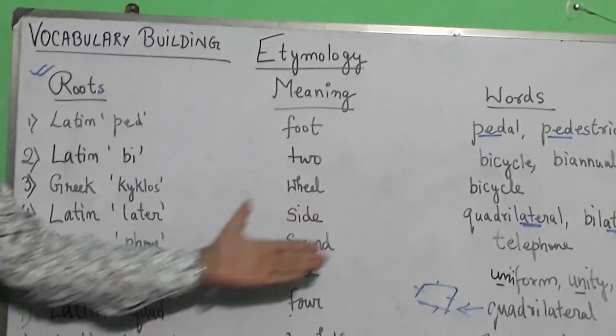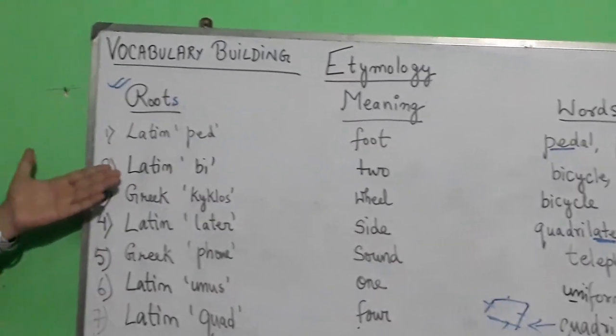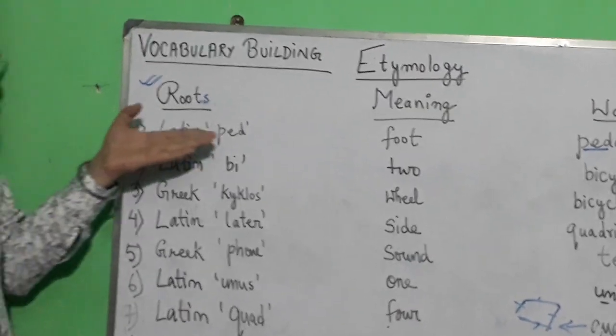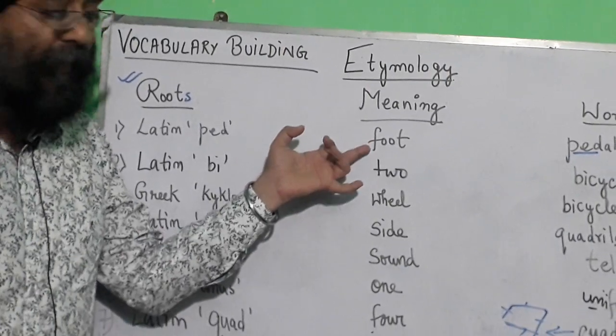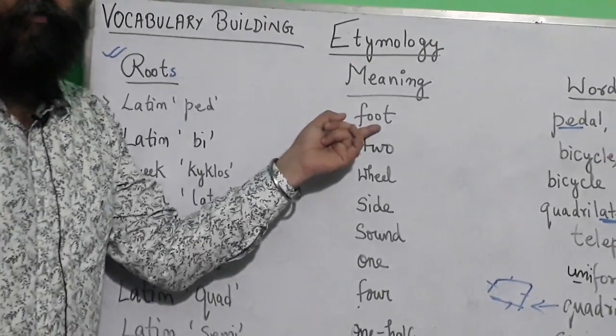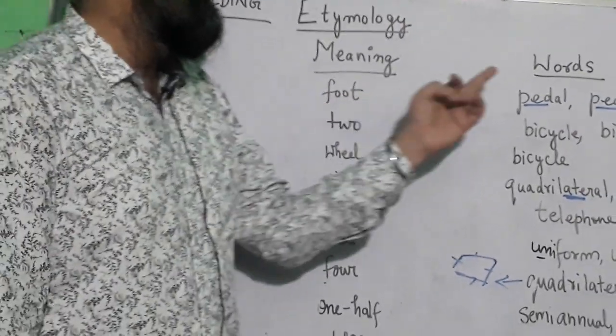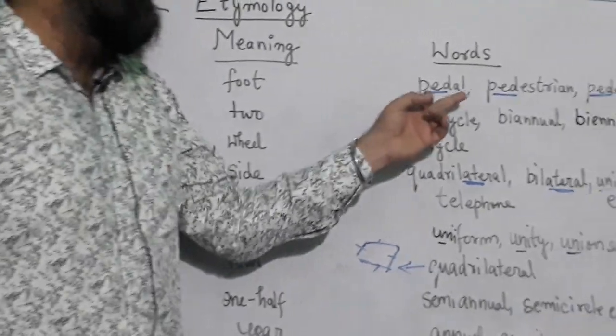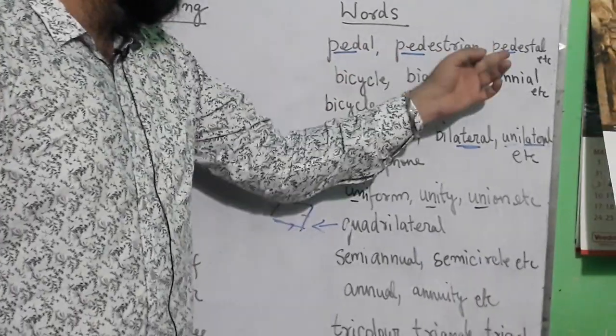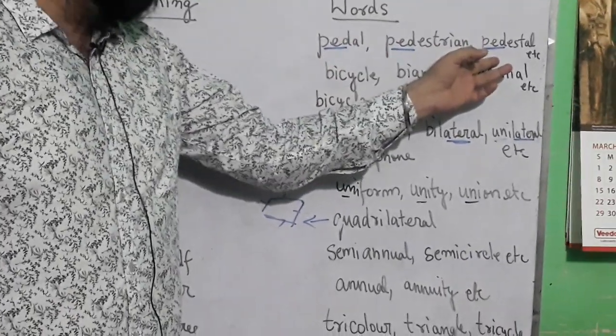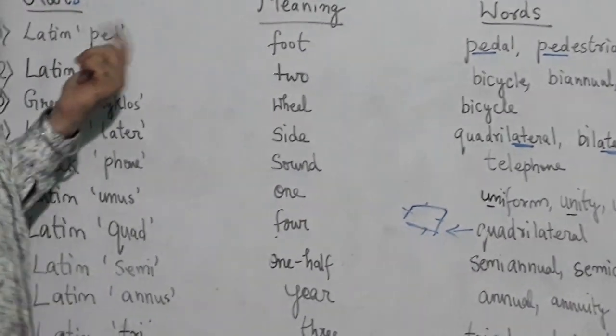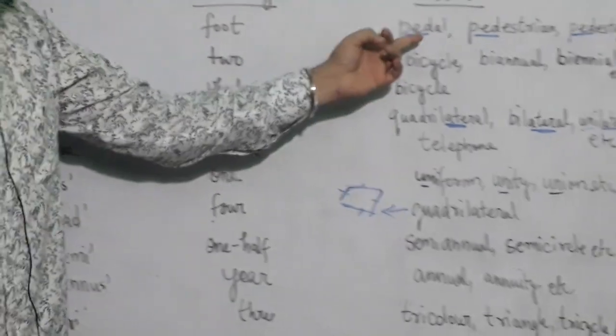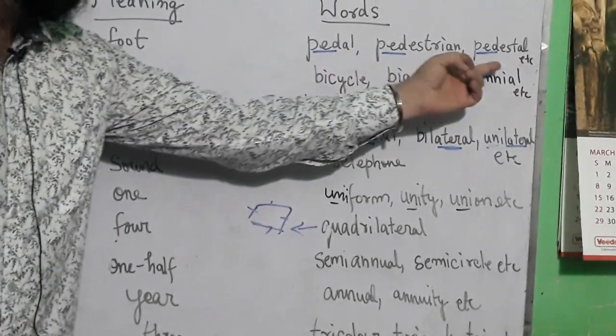These are the etymologies we need to keep in mind. The first etymology is Latin 'ped'. The English meaning of Latin 'ped' is foot, and the words that come from it are paddle, pedestrian, and pedestal. These are the root words which come from 'ped' and they give the meaning foot. They are used as prefixes.